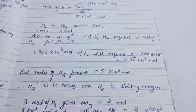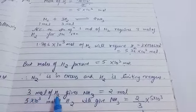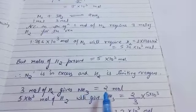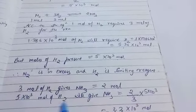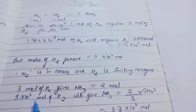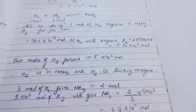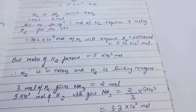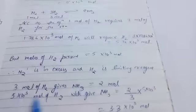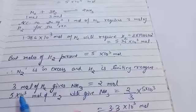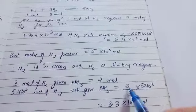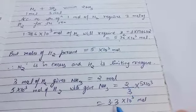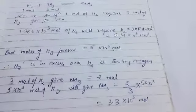Now calculate how much ammonia is formed. From the equation, 3 moles of H₂ give 2 moles of NH₃. We have 5 × 10³ mol of hydrogen (the limiting reagent). Using the unitary method: moles of NH₃ = (2/3) × 5 × 10³ = 10 × 10³ ÷ 3 = 3.33 × 10³ mol of NH₃.